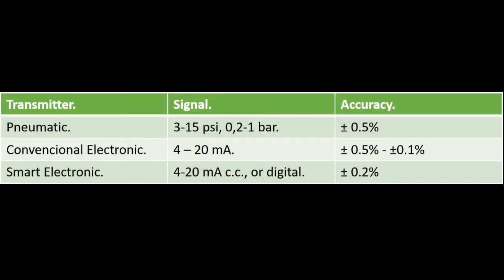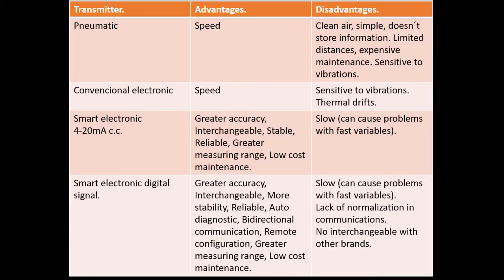Now I will show you some comparative tables between pneumatic, conventional electronic, and intelligent transmitters with 4 to 20 mA and digital output signals respectively. That will be all for today's video. Don't forget to give me a like and subscribe — I upload videos every Friday and on Wednesdays in Spanish. Adiós!